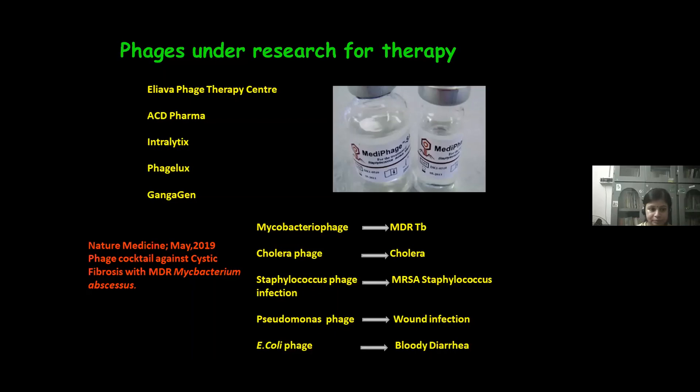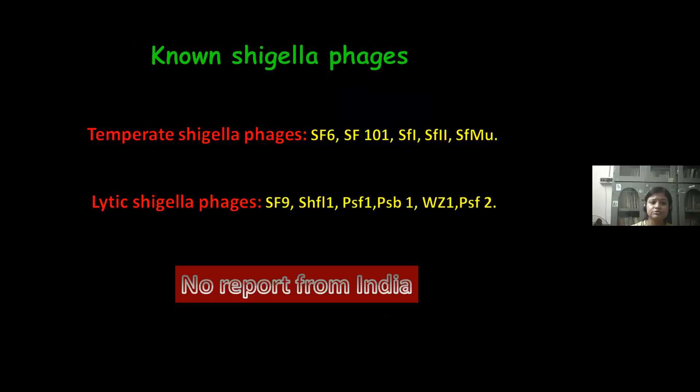Recently, Hatfull et al. reported the use of a phage cocktail for the treatment of cystic fibrosis infected with multidrug-resistant Mycobacterium abscessus. Till now, around 45 Shigella phages have been discovered. Among them, some are temperate phages like SF-6, SF-100-1, and some are lytic Shigella phages like SF-9, SHFL-1. But there was no report of Shigella phages from India.